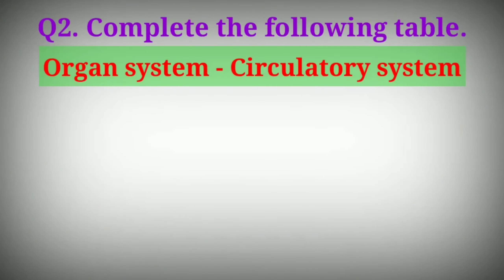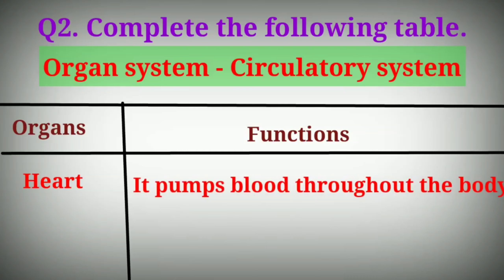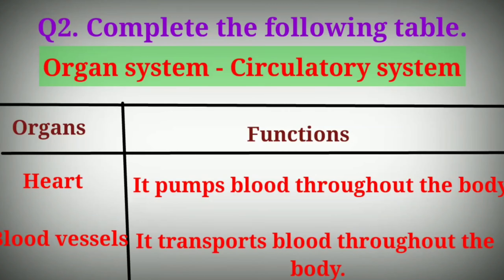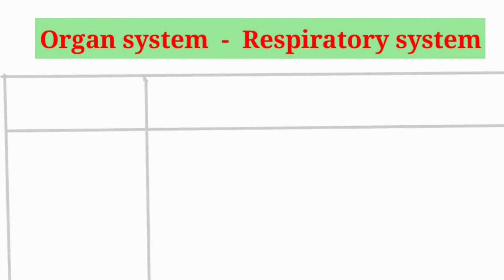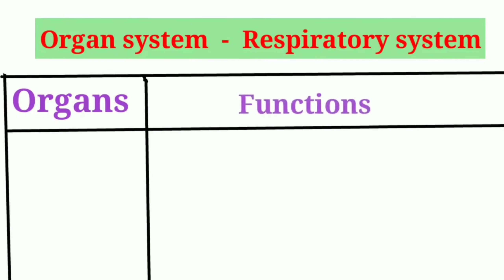Question 2 – Complete the following table. Organ system: Circulatory system. Organs and functions: Heart – it pumps blood throughout the body. Blood vessels – it transports blood throughout the body. Organ system: Respiratory system – organs and their functions.